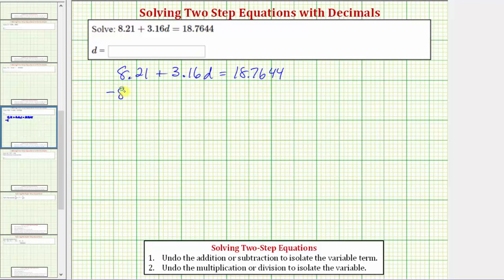Subtracting 8.21 on the left undoes the positive 8.21. Then we perform the same operation on the right side. We need to make sure we line up the corresponding place values so we can accurately subtract. So simplifying, again on the left, 8.21 minus 8.21 is zero. So we're left with 3.16d on the left.